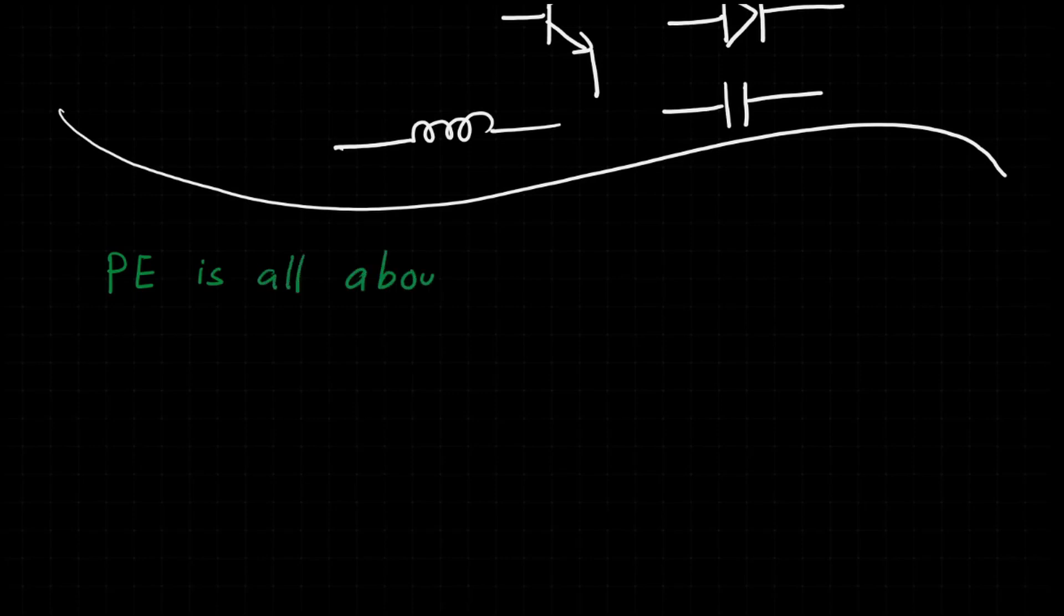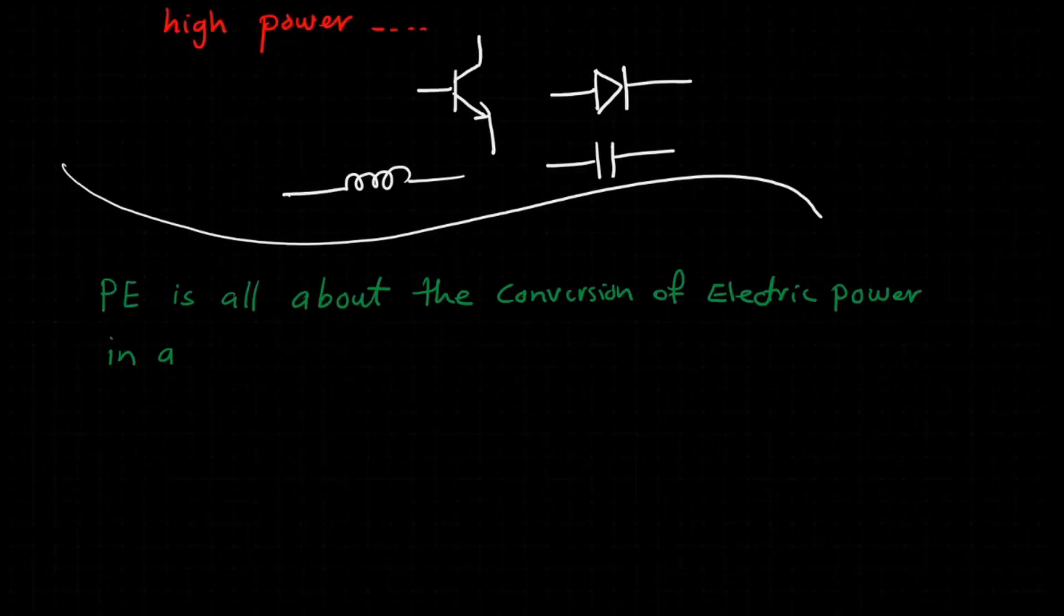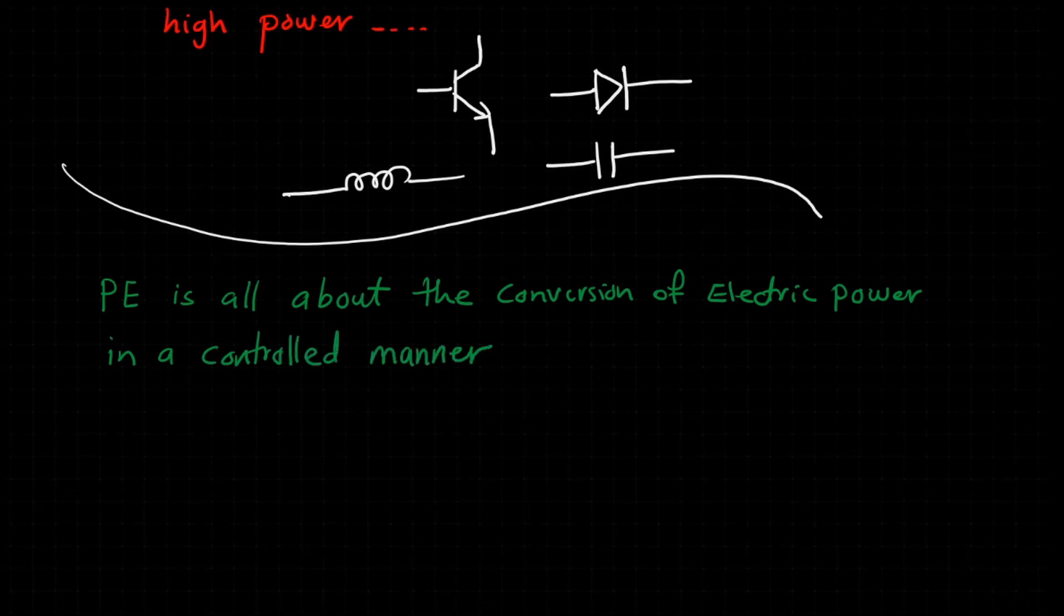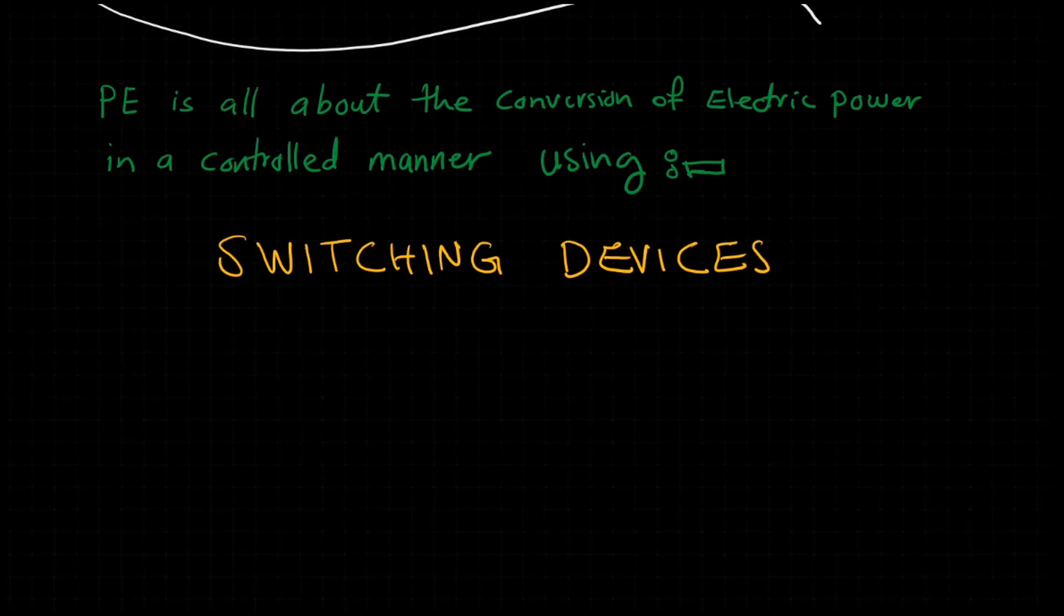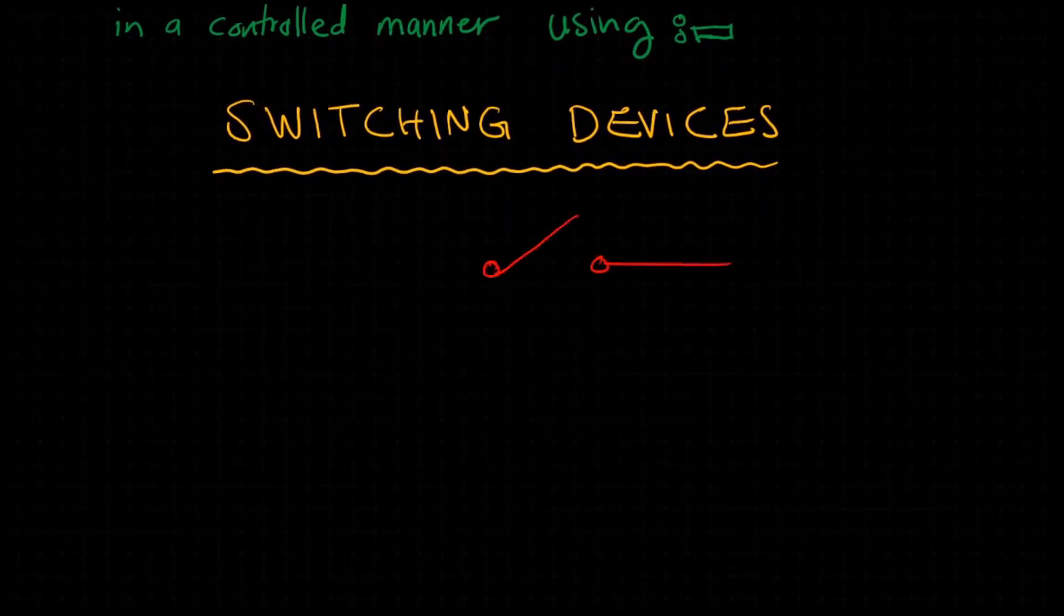Actually, power electronics is all about the conversion of electric power in a controlled manner using switching devices. Switching is something very important in power electronics.